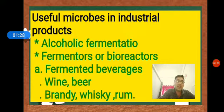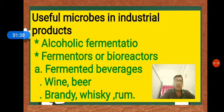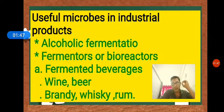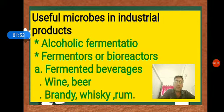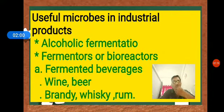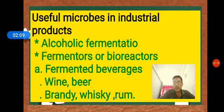The first useful microbe in industrial products relates to fermented beverages or alcoholic beverages. The microbes that produce alcoholic beverages perform alcoholic fermentation. The microbe responsible is Saccharomyces cerevisiae, commonly known as brewer's yeast.